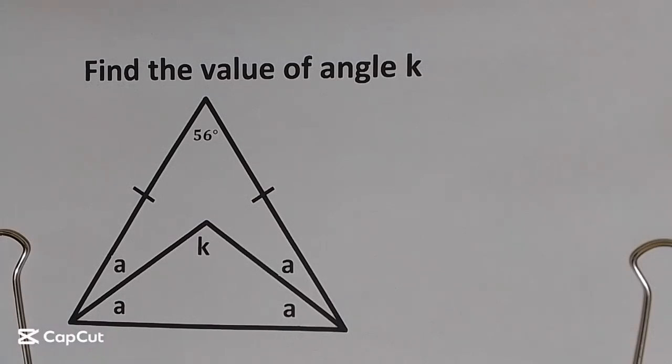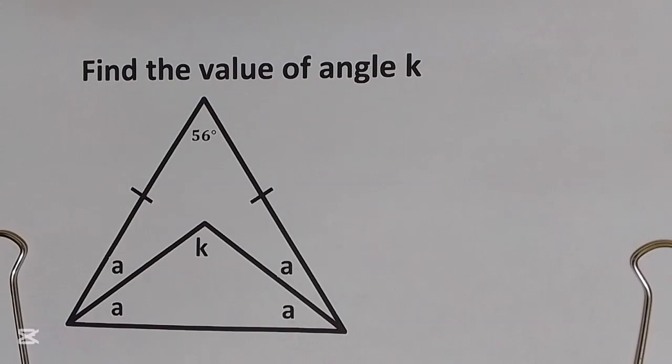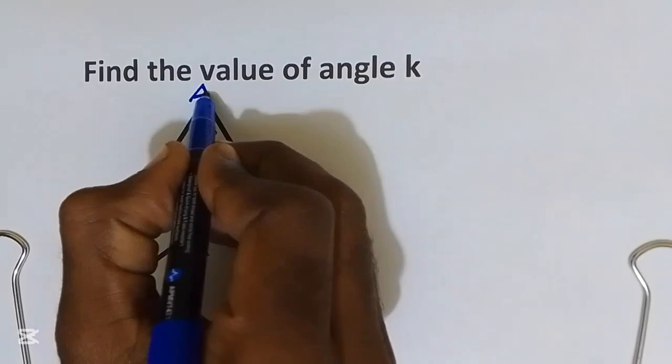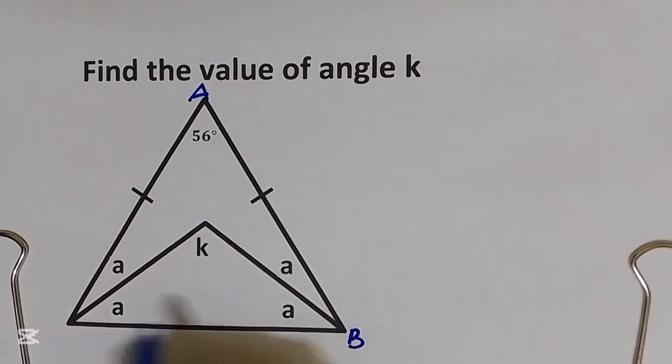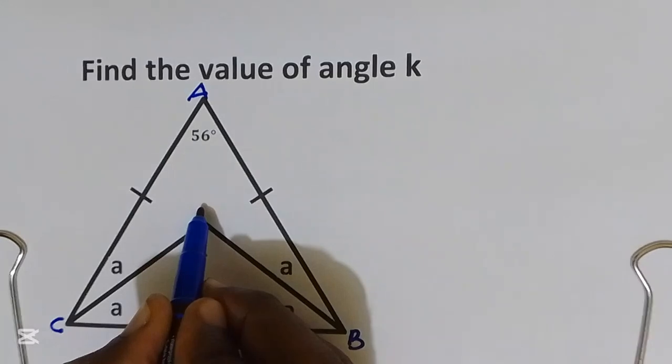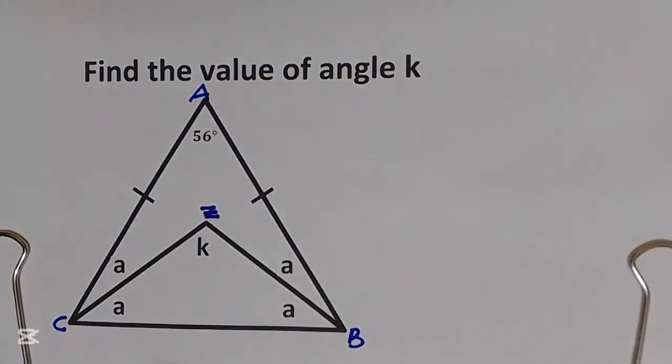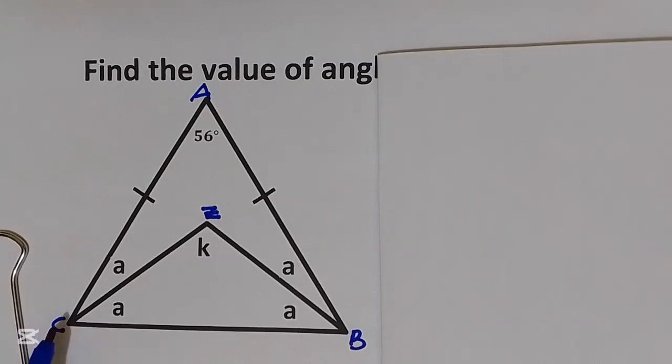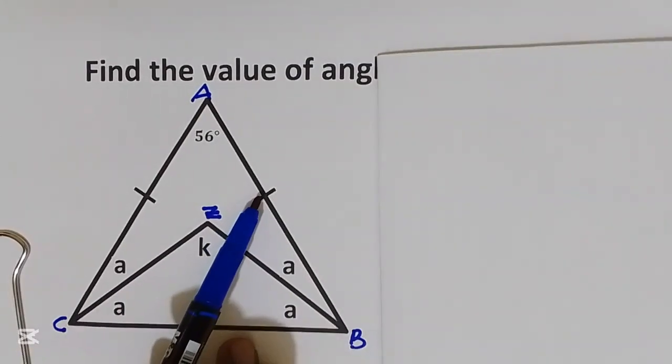Hello, welcome back to the channel. We have a geometry question. We need to find the value of k. First, let us start by naming our triangles. This is going to be triangle ABC, and this point I'll call it point Z. Triangle ABC is isosceles triangle because they gave us this sign here.